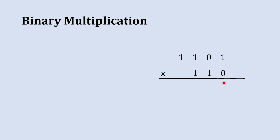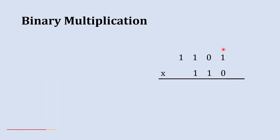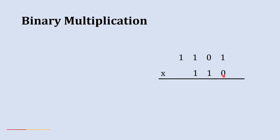We are going to start multiplication with the rightmost column, or we can say the least significant bit. This is the LSB of the multiplier. So now let's start with this 0 — we need to multiply the 0 of the multiplier with all bits of the multiplicand one by one.